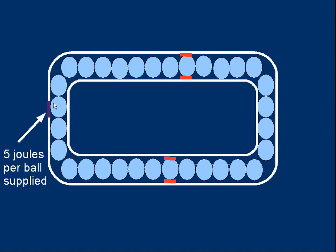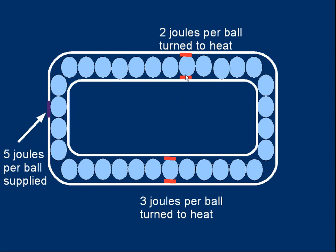If you start pushing the balls round they'll settle down to a steady speed depending on how hard you're pushing. Let's put some numbers in: suppose you're supplying five joules of energy for each ball, doing some work pushing the balls. Eventually they settle to a steady speed. You're providing the energy to overcome the resistance of the friction areas, which get warm. Let's suppose the top bit produces two joules of heat for each ball that passes through, and the bottom one produces three joules. The five joules you supply equals two joules plus three joules — that is because of the law of conservation of energy.